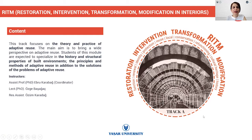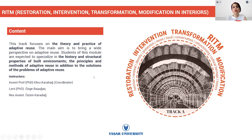Let me introduce you to the fields in more detail. The written field — I will call it 'written' and will not use the full name always — focuses on the theory and practice of adaptive reuse. The main aim is to bring a wide perspective on adaptive reuse. Students of this module are expected to specialize in the history and structural properties of built environments, the principles and methods of adaptive reuse, and solutions to the problems of adaptive reuse.